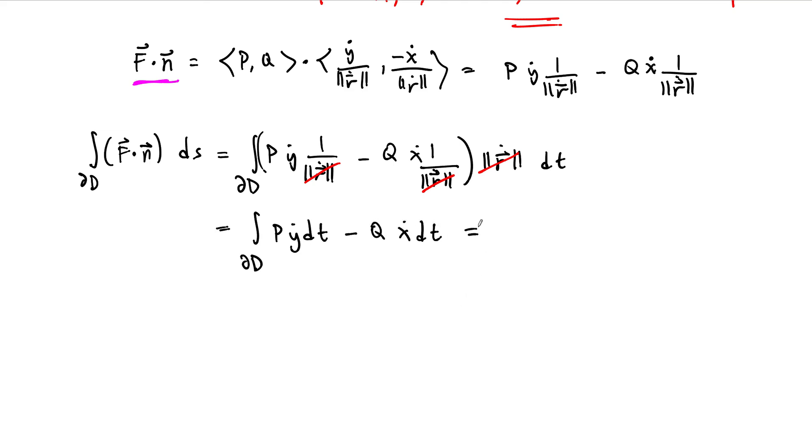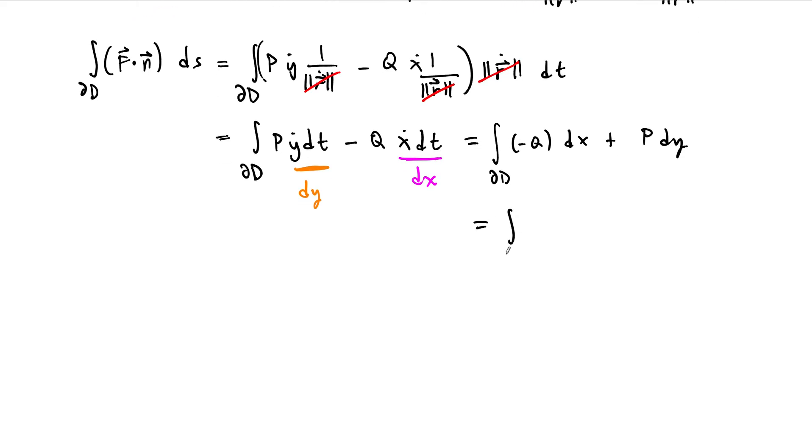We're almost there because what happens here? Y dot DT, that's just DY. That's the differential DY. And X dot DT, that's the differential DX. And I can reframe this thing as the integral around the boundary, and I'm going to put it back in the right order now, minus Q DX plus P DY. And so this is a path integral around the boundary of D of the vector field minus Q comma P dotted with DR. And so now the vector field inside this path integral, this vector field F, this vector field now we can apply Green's Theorem to.